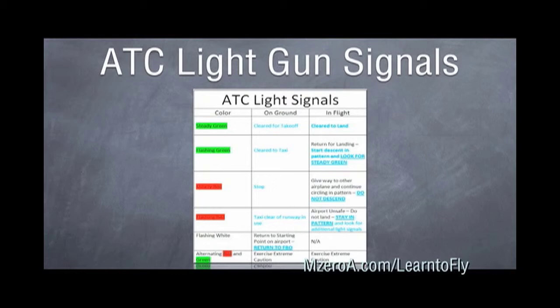A steady red on the ground is for stop, while a steady red in the air is give way to other aircraft or continue circling.